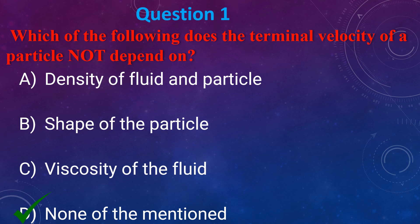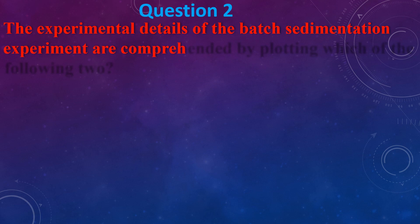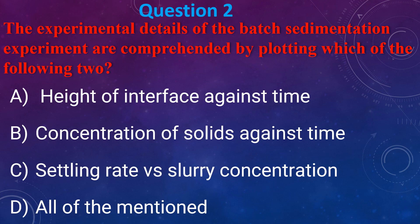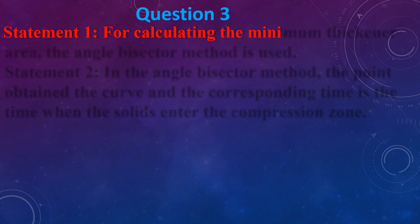The answer is (d) None of the above. The experimental details of a batch sedimentation experiment are obtained by plotting which of the following? (a) Height of interface against time, (b) Concentration of solid against time, (c) Slurry concentration, (d) All of the mentioned. The answer is (a) height of interface against time.